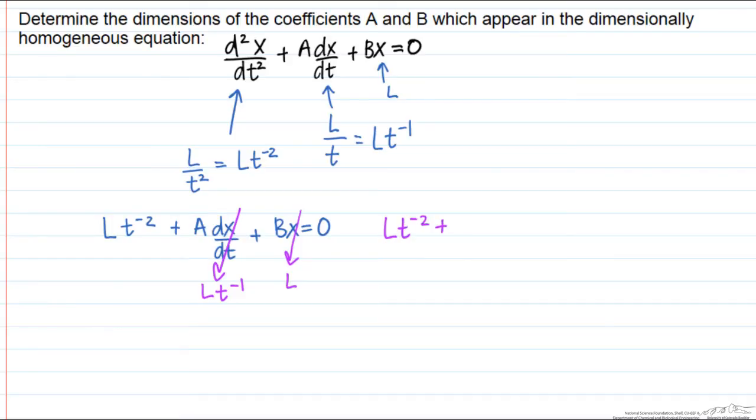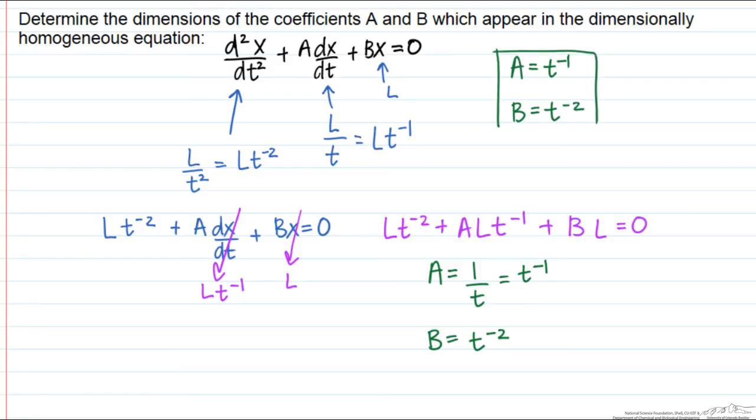So in order for this to be dimensionally homogeneous, therefore the dimensions of our A are going to be t⁻¹, or 1 over time, and our dimensions of B are going to be t⁻², or 1 over t², and that way all the terms have the same dimensions of L length times time to the minus 2.